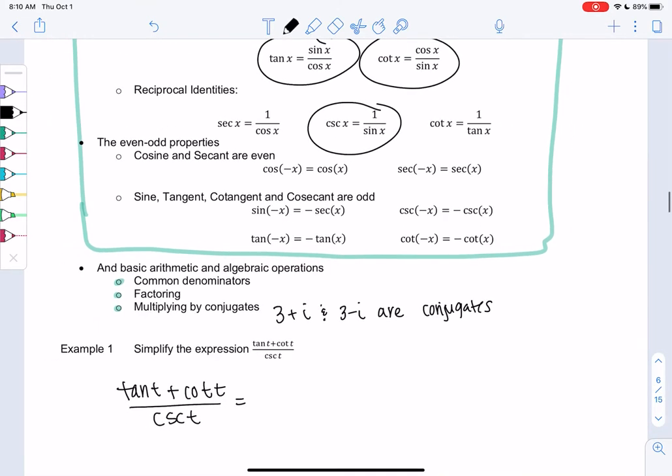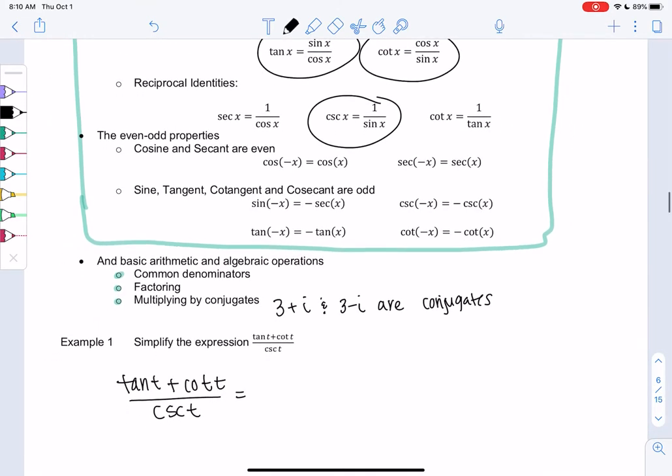So we'll use these three. Write everything in terms of sine and cosine and just kind of see where it takes us. So I don't necessarily know the correct path in the beginning. So sine over cosine plus cosine over sine. Notice I'm using t not x because the variable here is t. And then the last one is cosecant which is 1 over sine.